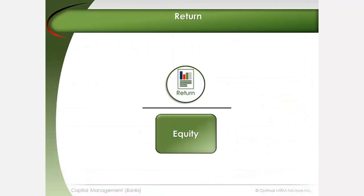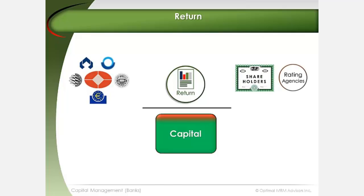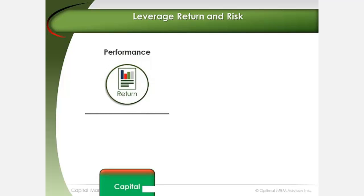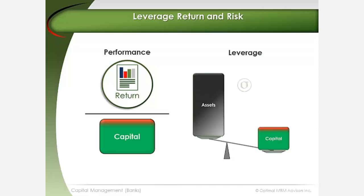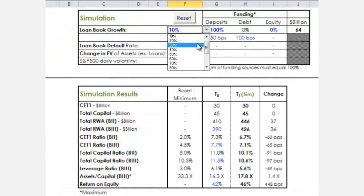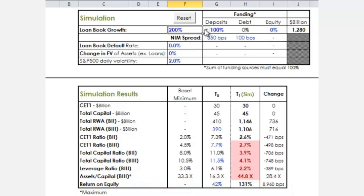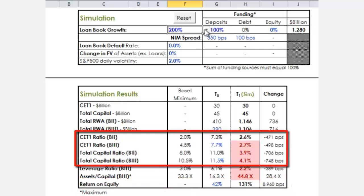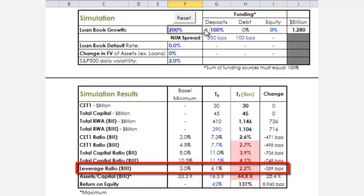A key bank objective is to maximize its return on equity, or broadly speaking, return on capital. It must do so within constraints imposed by regulators, shareholders, and other constituents. Inasmuch as leverage presents banks with opportunities to generate higher returns on capital, it also carries risks. The bank's return on equity increases as the size of the loan book grows. Funding growth purely with deposits, however, rapidly decreases capital ratios and increases balance sheet leverage, or in Basel III terms, reduces the bank's leverage ratio.